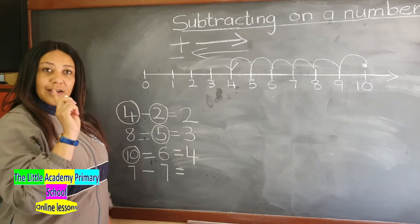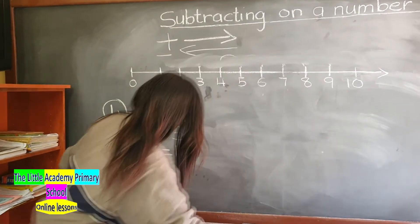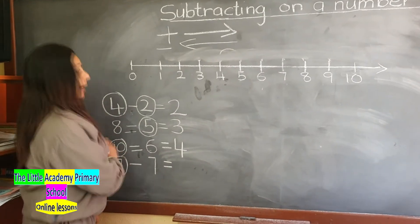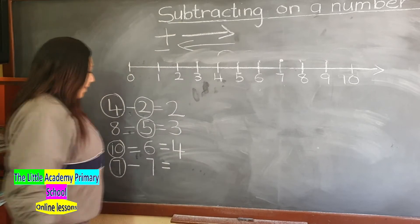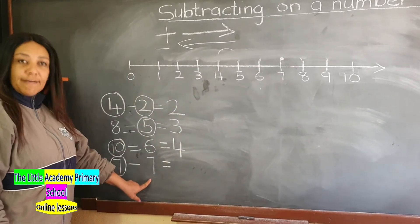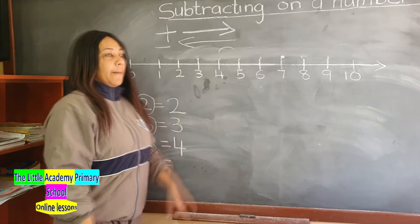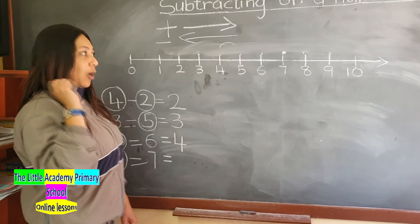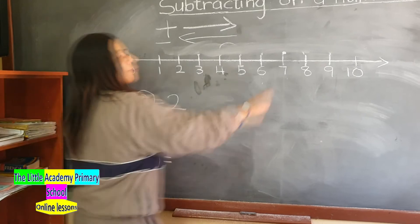Now let's take the last example, which is 7 take away 7. We find our number 7 on the number line — there it is over there. And we are going to move how many times? We are going to move 7 times. We ask ourselves, are we moving forward or backwards? The subtraction sign tells us that we are moving backwards. How many times? 7 times.